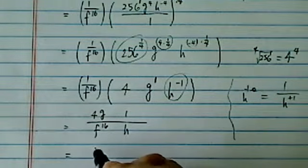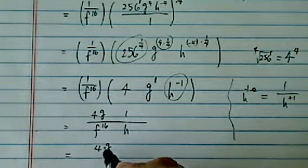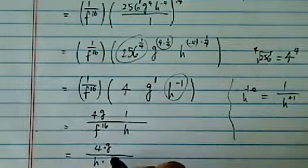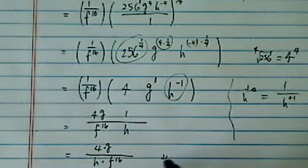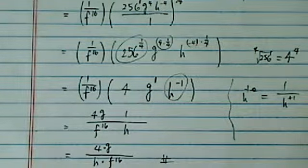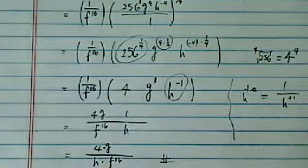Let's write it one more step, and then we're going to finish cleaning it. 4 times g times f to the 16 over h, and that's the answer. That's how we handle simplifying exponents.